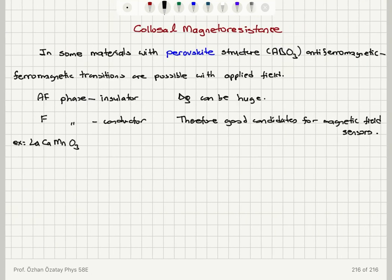The colossal magnetoresistance is an effect in materials with perovskite ABO₃ structure, where the antiferromagnetic phase is an insulator and the ferromagnetic phase is a conductor. The transition is induced by application of a large magnetic field, resulting in a huge change in resistivity — making it a good candidate for a magnetic field sensor. However, the effect requires large magnetic fields, and some materials also require low temperatures, so it is not very practical at the moment.